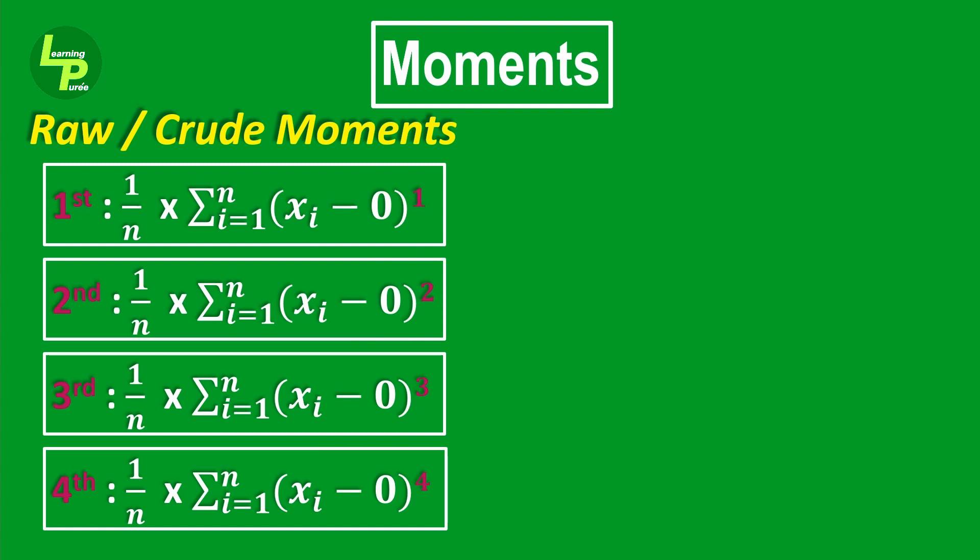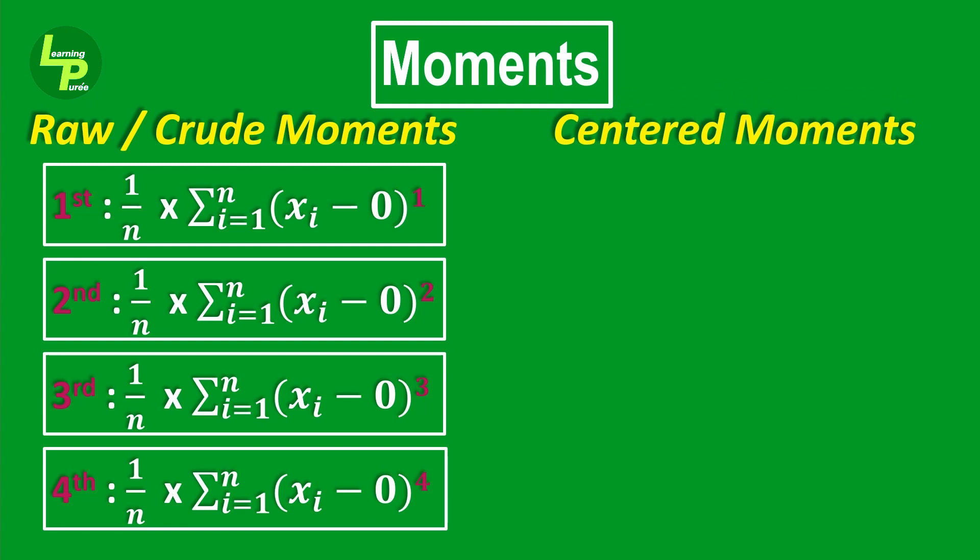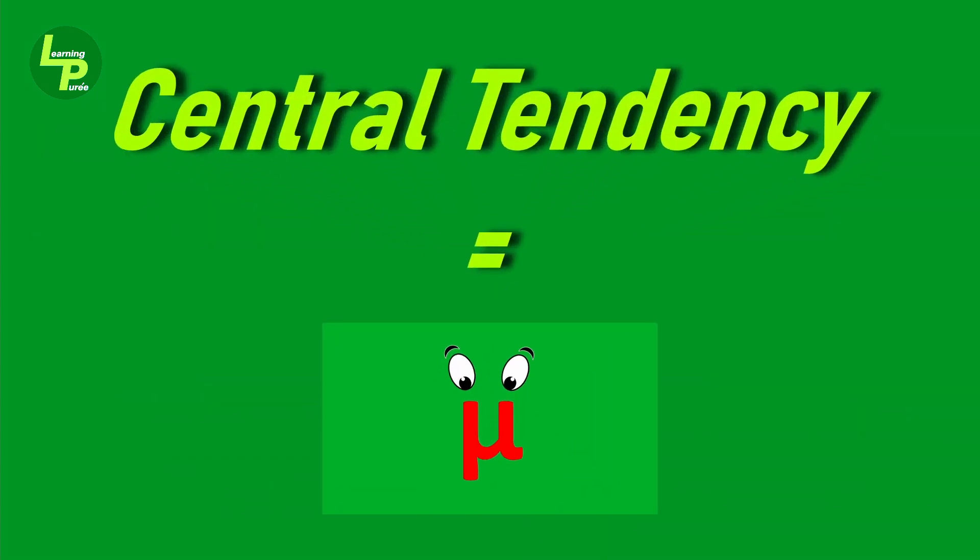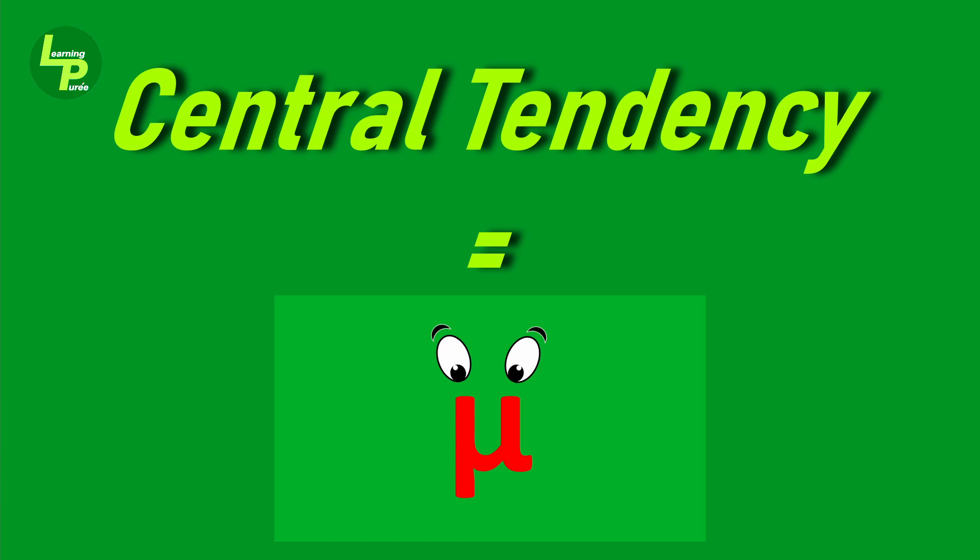All moments that do not use this concept are the raw or crude moments. All the moments that use this concept of shift of origin are the centered moments since they are centered around the arithmetic mean or the central tendency of the data set.